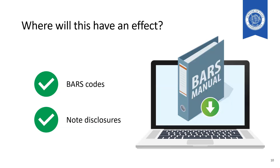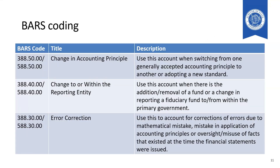So where will this have an effect? There will be new BARS codes under this new accounting and reporting, as well as different note disclosures when you have any of these situations that you're required to report to us. We have identified the new BARS coding that will be available. Note that the code for prior period adjustments is being retired and that code is being split out into what you see here.